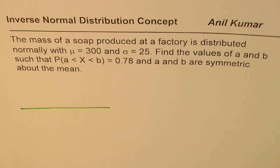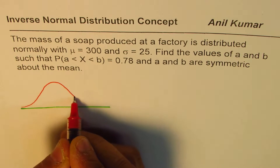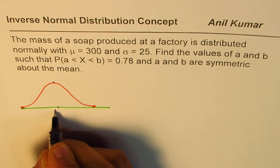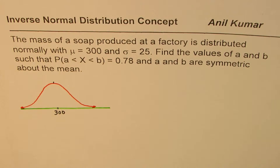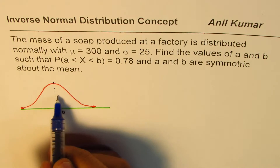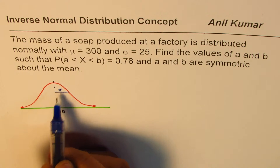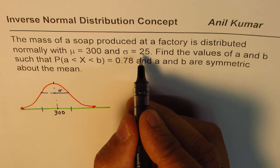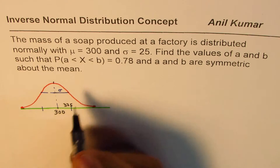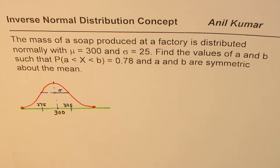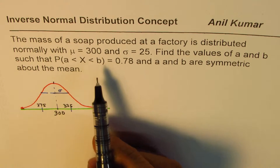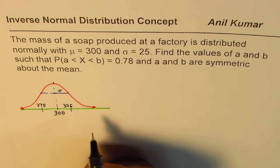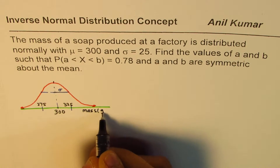Let's try to understand the question first. We'll consider the normal distribution graph for the given situation. The mean, the central value, is 300. Standard deviation is the deviation from the mean — 25 more gives us 325, and 25 less gives us 275. The random variable represents mass, which we'll assume is in grams.